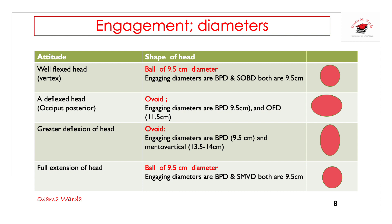The shape of the head differs according to the longitudinal engaging diameter. In a well-flexed head, the head is like a sphere with a diameter of 9.5 cm. In face presentation, it is also a sphere or pole with a diameter of 9.5 cm. However, when the head is deflected as in the occipitoposterior position, it is oval — one diameter is longer than the other.